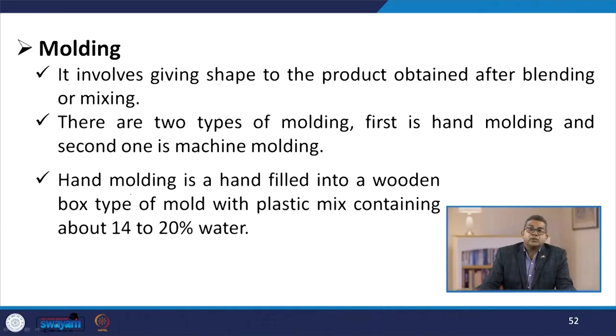Molding involves giving shape to the product obtained after blending or mixing. There are two types: hand molding and machine molding. Hand molding involves filling by hand into a wooden box-type mold with a plastic mix containing about 14–20% water. It is a low-cost method but very slow, not used for mass production, requires moderate pressure, and involves a two-stage process. For non-plastic mixtures and clay containing less than 5% water, dry pressing is used with pressure up to 35–140 MPa. Slip casting involves pouring a suspension of fine refractory particles in water into a plaster of Paris mold — advantageous for complicated shapes but products are highly porous.